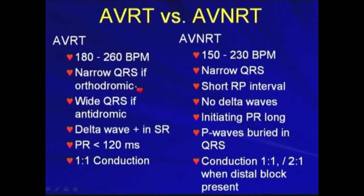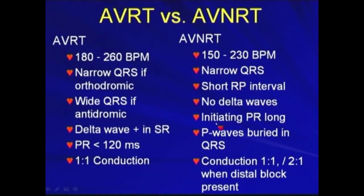AVRT shows a narrow QRS complex if orthodromic, and a wide QRS complex if antidromic tachycardia. There is a delta wave positive in sinus rhythm with a PR less than 120 ms, and 1-to-1 conduction during tachycardia. In AVNRT, there is no delta wave, and the P wave is usually buried in the QRS, so no P wave is visible on the tachycardia ECG. Conduction is 1-to-1, or 2-to-1 when distal block is present, and there must be 1-to-1 conduction in AVNRT.